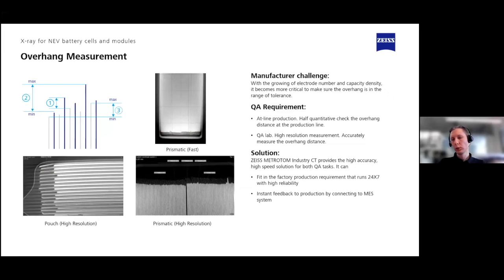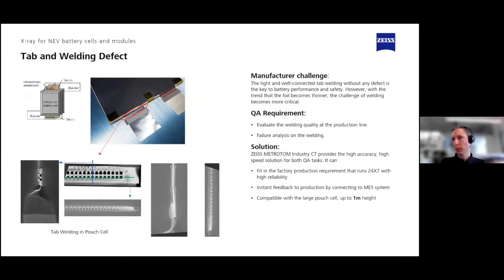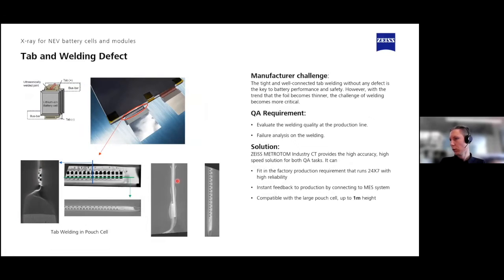The good thing is you can use the same system for both high-resolution and fast scanning. It's not necessarily required to have one CT for high-resolution analysis and another for fast analysis. Our systems are flexible enough for both uses. Looking at welding: here we see the tabs as an example in 2D slice images of the 3D volume data. You can check the welding process — see if there are any cracks, faults, missing material, or if all foils are welded together as needed. You can see the air, the metal, and whether there's enough contact area.